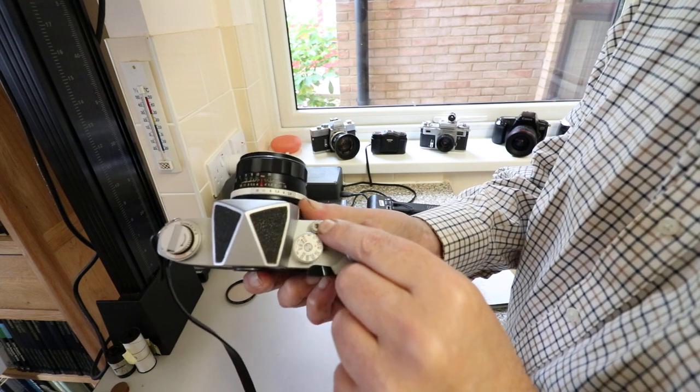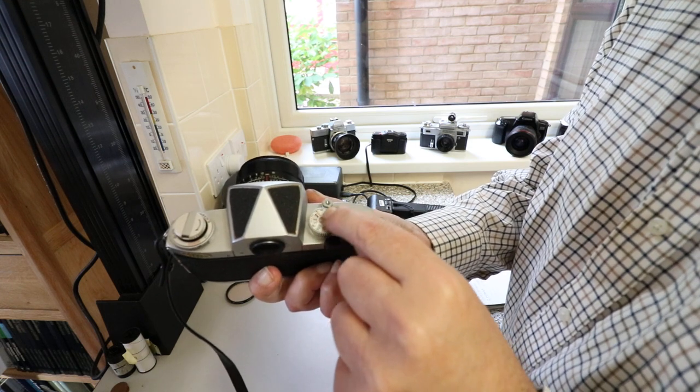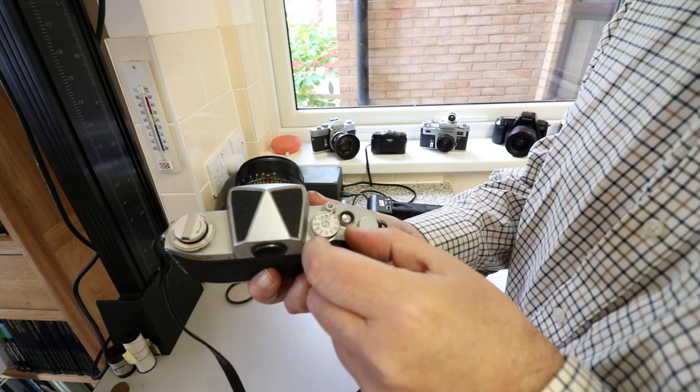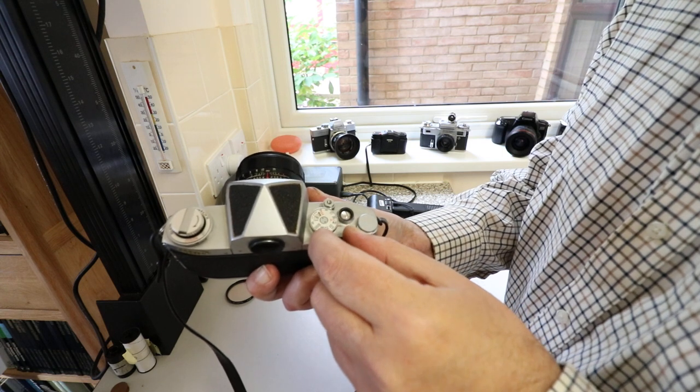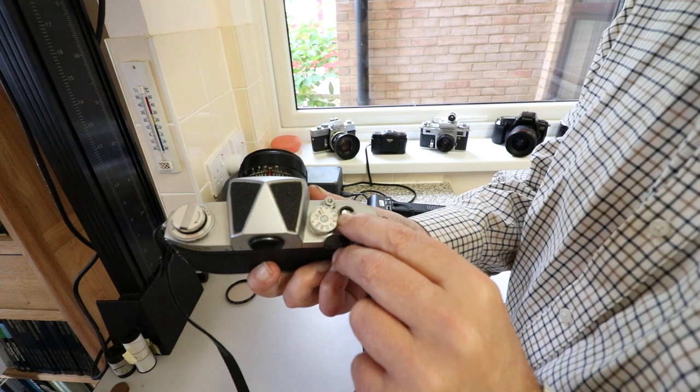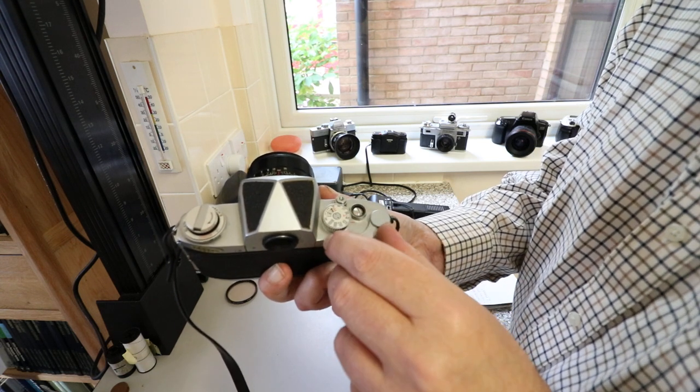I don't think there's any lock on that. It is threaded so you can put a cable release on it. Then we have the shutter speed dial and index mark. This camera has a B setting and goes from 1/15th all the way to 1/1000th of a second. Flash sync is between 1/30th and 1/60th.